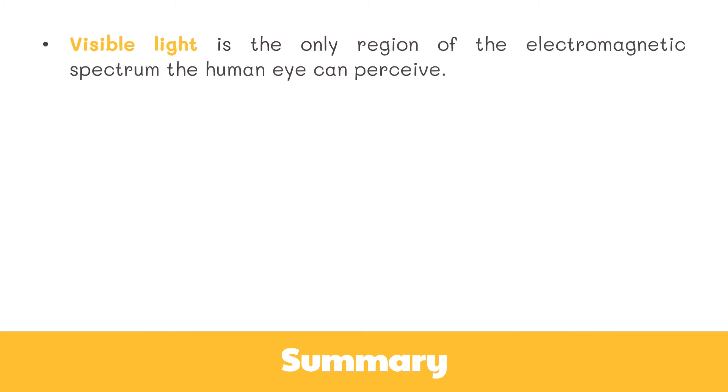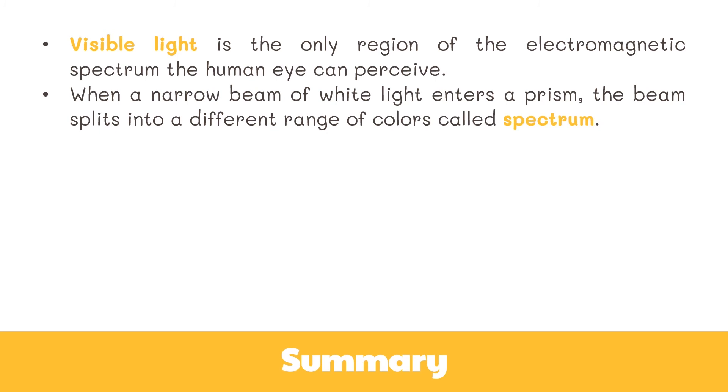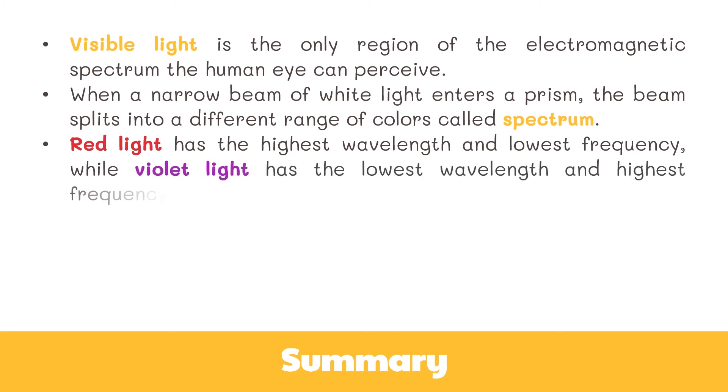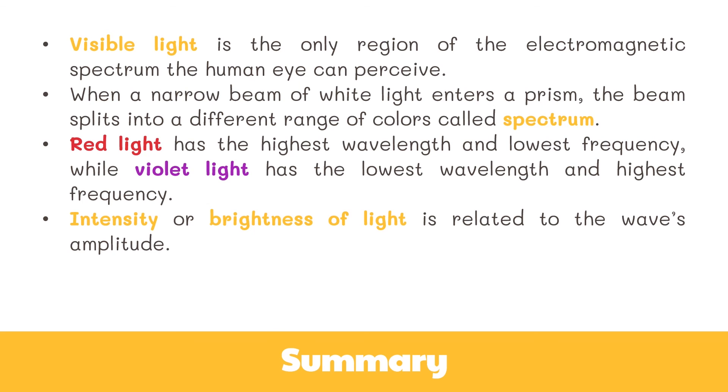Now, let's wrap things up! Visible light is the only region of the electromagnetic spectrum the human eye can perceive. When a narrow beam of white light enters a prism, the beam splits into a different range of colors called spectrum. Red light has the highest wavelength and lowest frequency, while violet light has the lowest wavelength and highest frequency. Intensity or brightness of light is related to the wave's amplitude. Photometry is the measurement of the brightness of a light source.